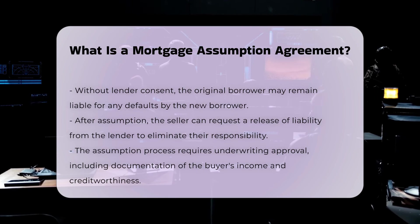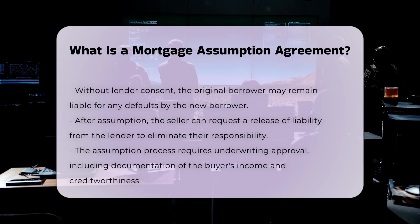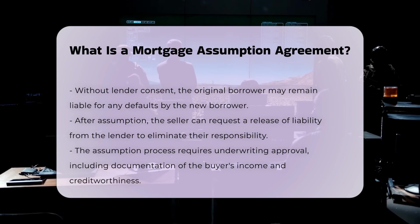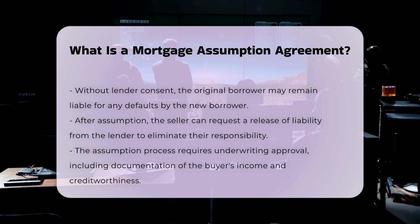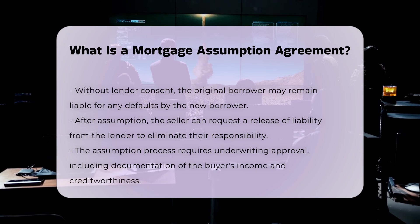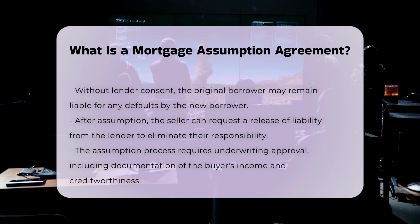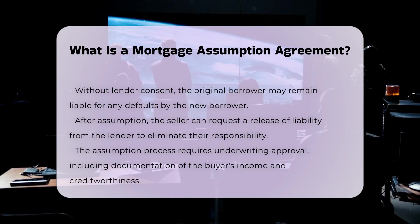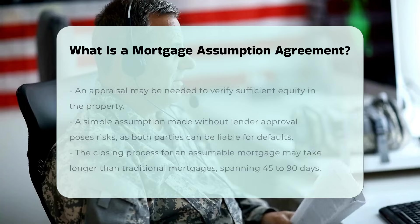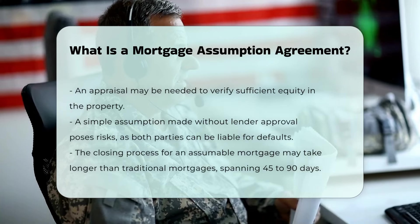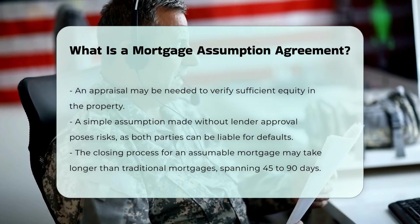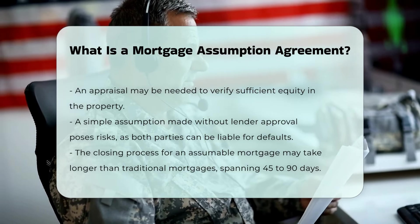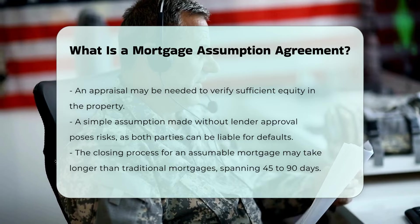Documentation and Approval: The process involves an underwriting approval from the lender, where the buyer must provide documentation to prove their income and creditworthiness. The lender may also require an appraisal to ensure there is enough equity in the property.